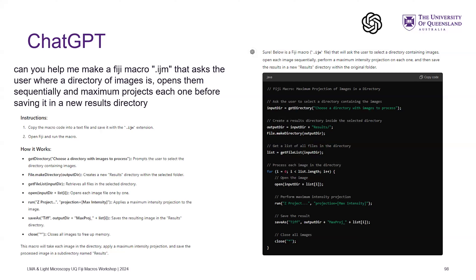I did get an error though - it said there are no images open, because in this case the AI-generated code didn't have that check built in. So if you did have a folder of images it would probably work, but it may not be perfect either. So that's something to be aware of.